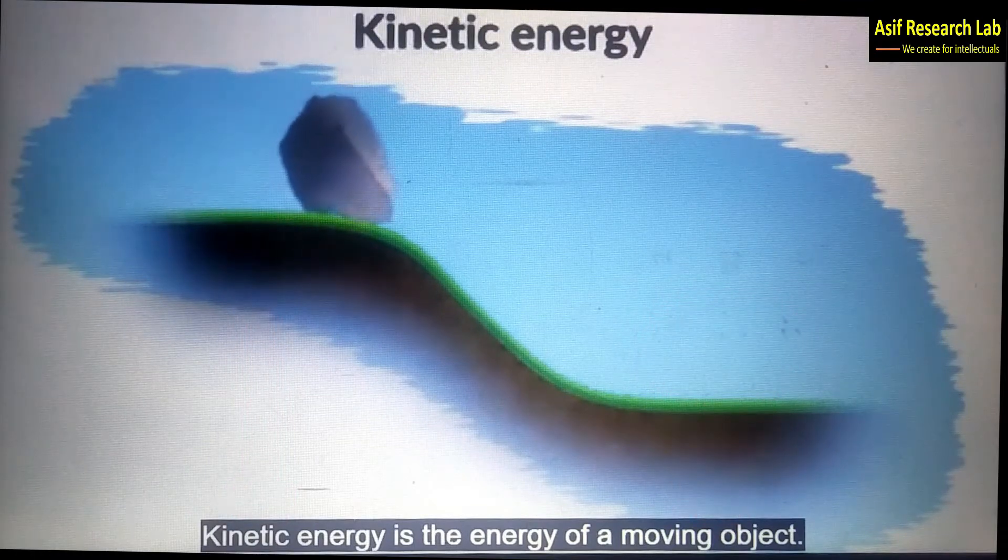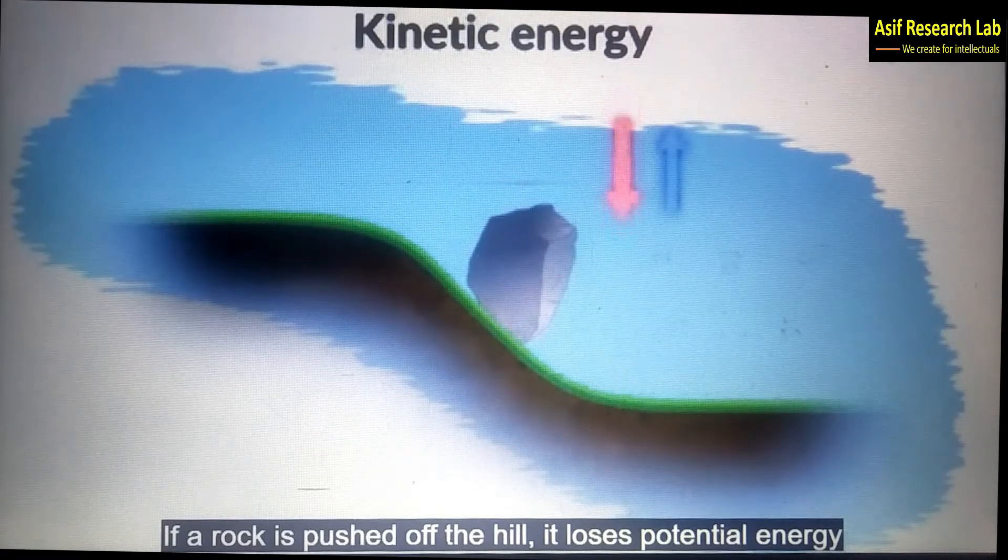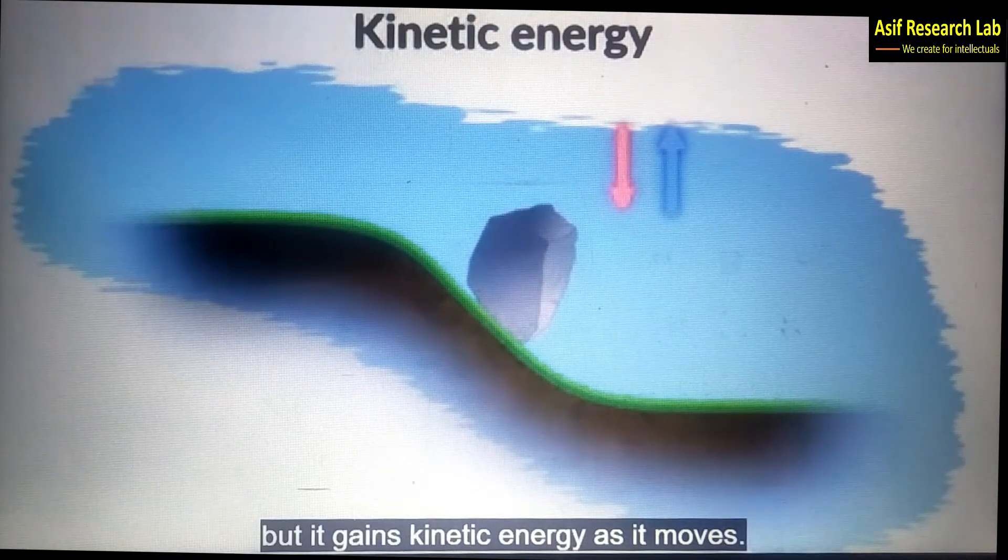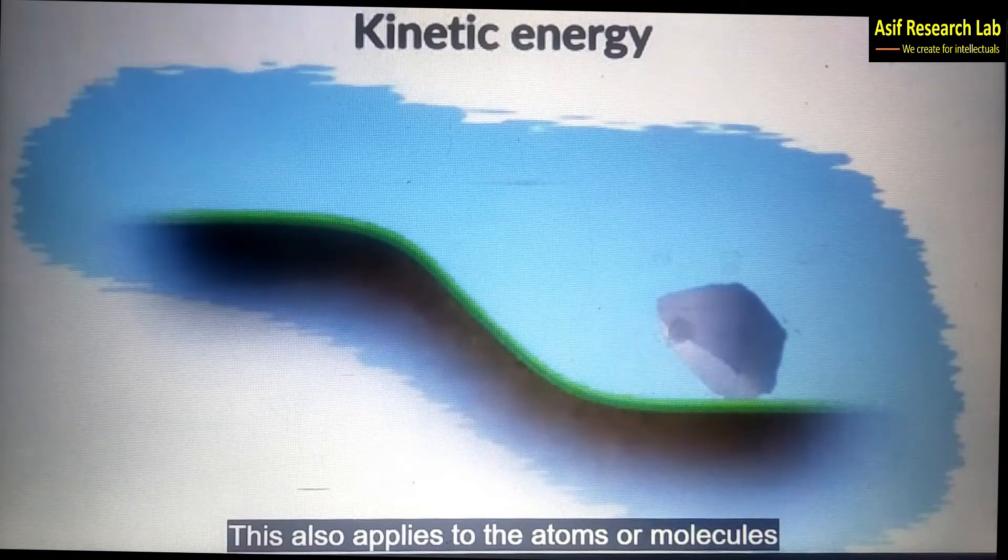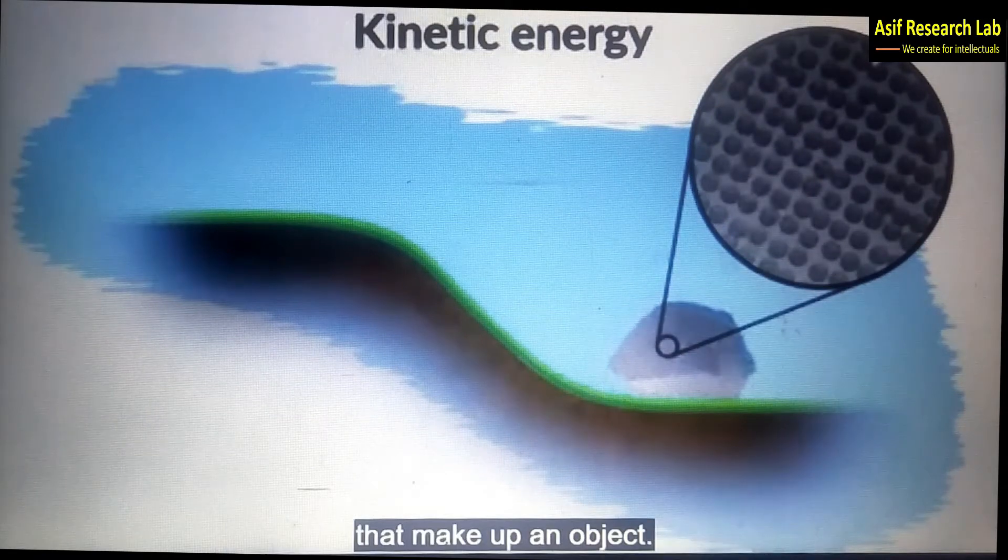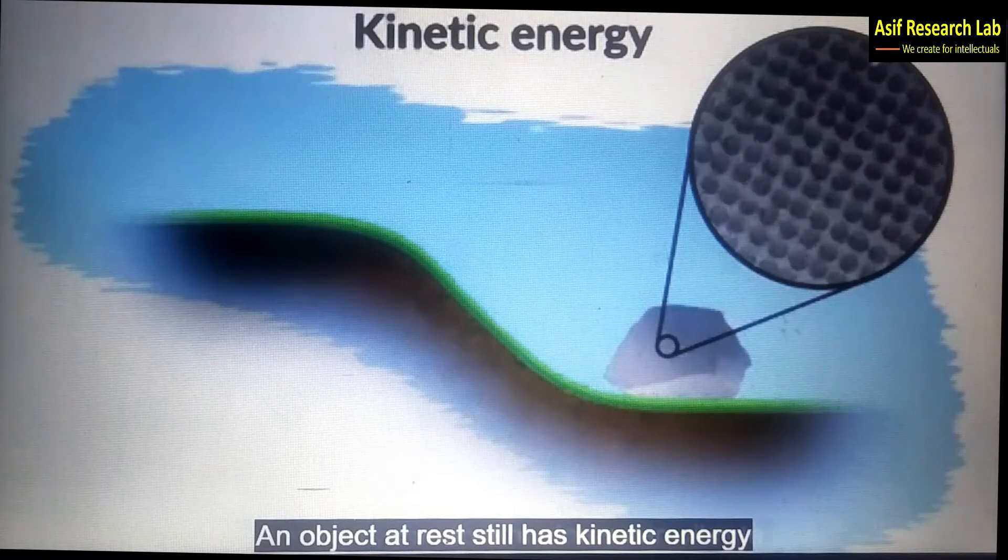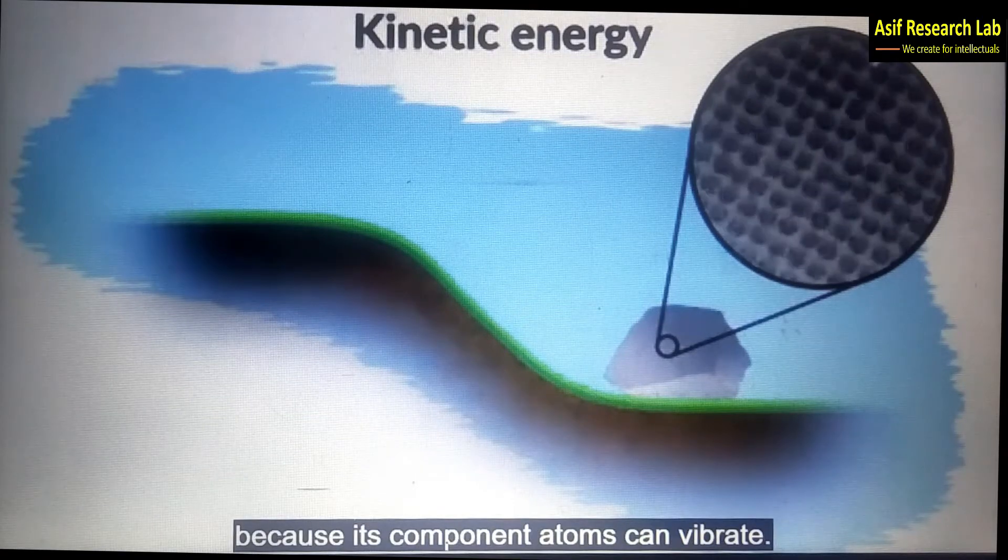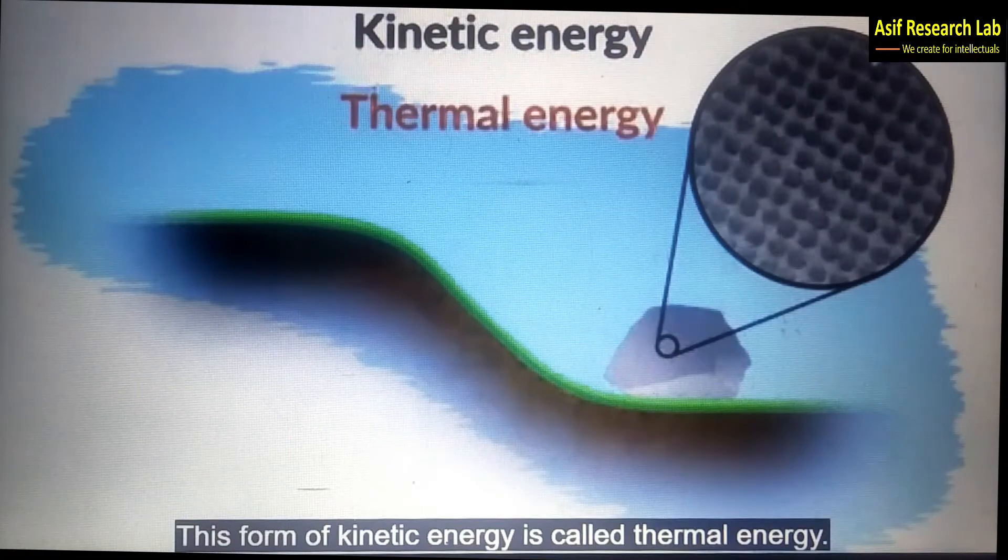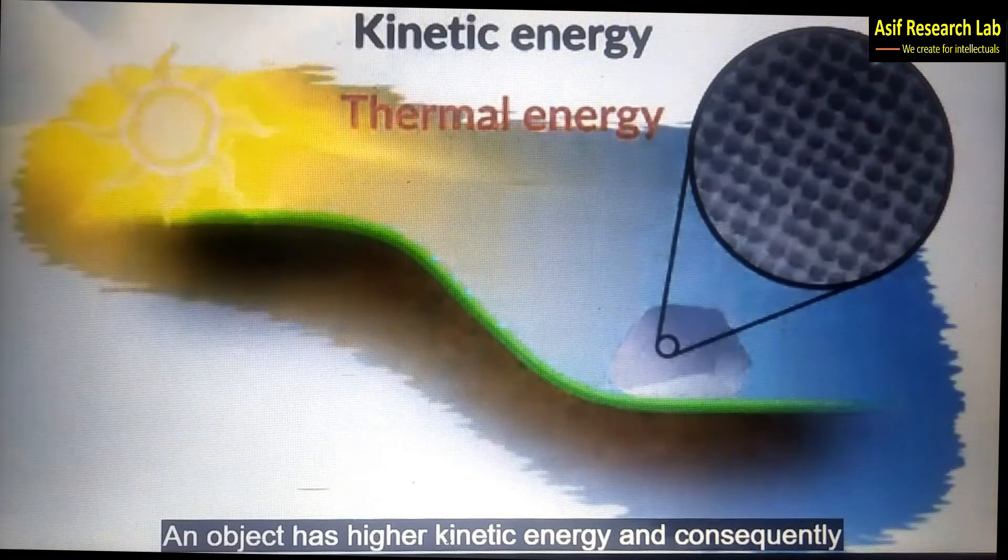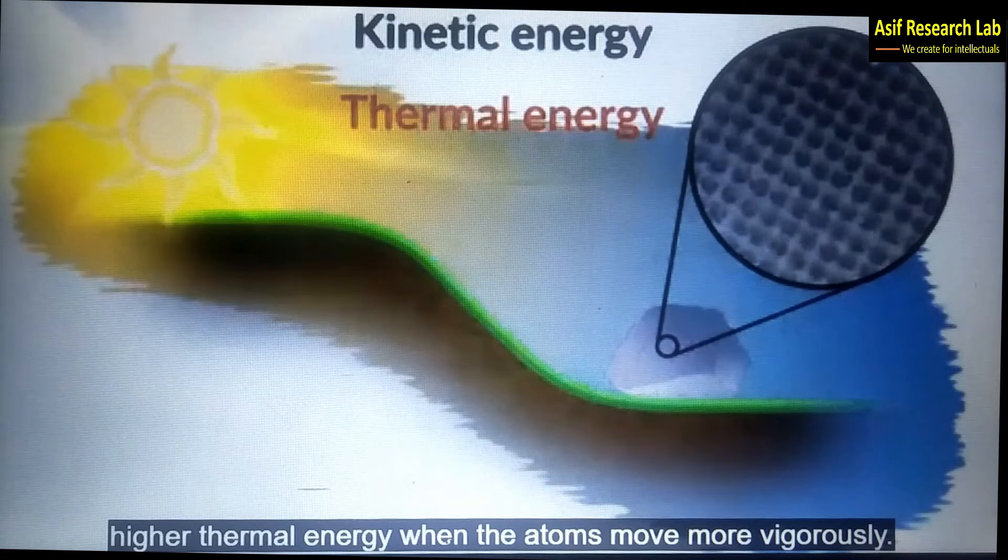Kinetic energy is the energy of moving objects. If a rock is pushed off the hill it loses potential energy but it gains kinetic energy as it moves. This also applies to the atoms or molecules that make up an object. An object at rest still has kinetic energy because its component atoms can vibrate. This form of kinetic energy is called thermal energy.